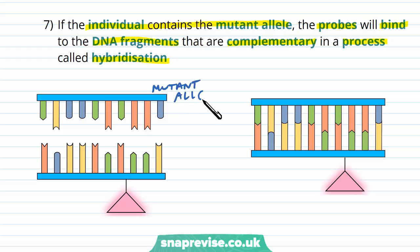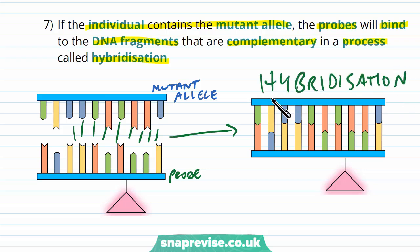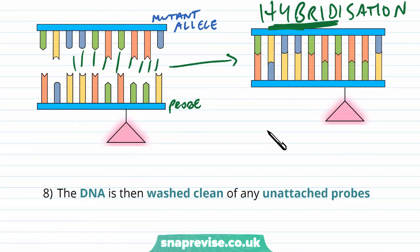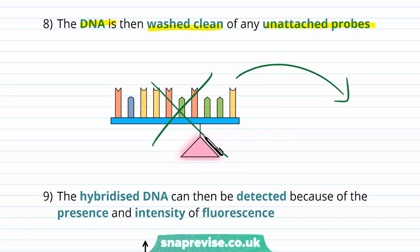The probe — complementary to the known mutant allele sequence — binds to the patient's mutant allele in hybridization. Hybridization is so called because it combines two different things: the original patient DNA with the new synthetic probe DNA, forming a hybrid section of DNA. The DNA mixture is then washed clean of any unattached probes, so free probes won't give off false signals.